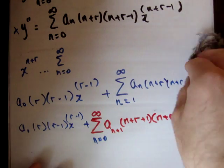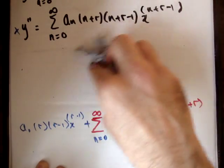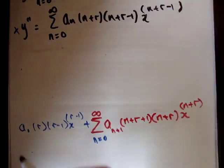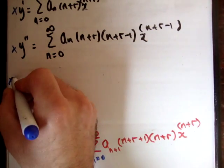Alright, so just bear with me now one moment. Alright, so what I'm going to do is rewrite the whole thing up here. I know you can't see it yet, just bear with me now. So x, y double prime.